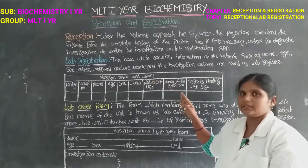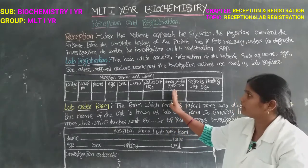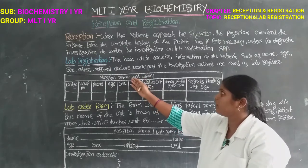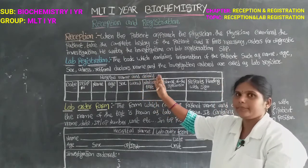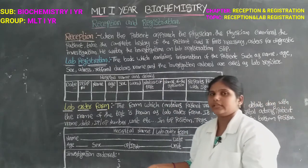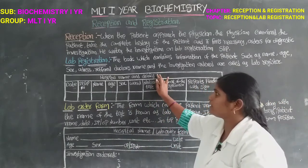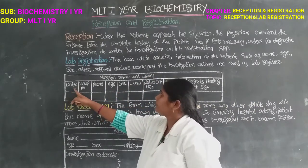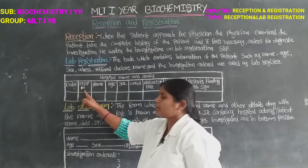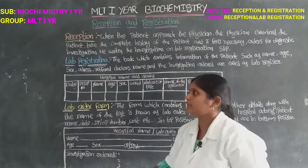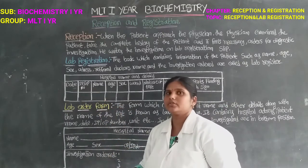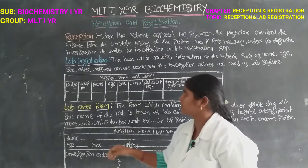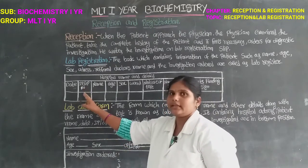There is a form in the lab register book. First, we have the hospital name and its location details. Next, we have the patient name. Then the IP or OP number — IP means Inpatient, which means the patient is admitted to the hospital. OP means Outpatient, meaning the patient visits a doctor without admission. If we have an ID number, we go to the reception.